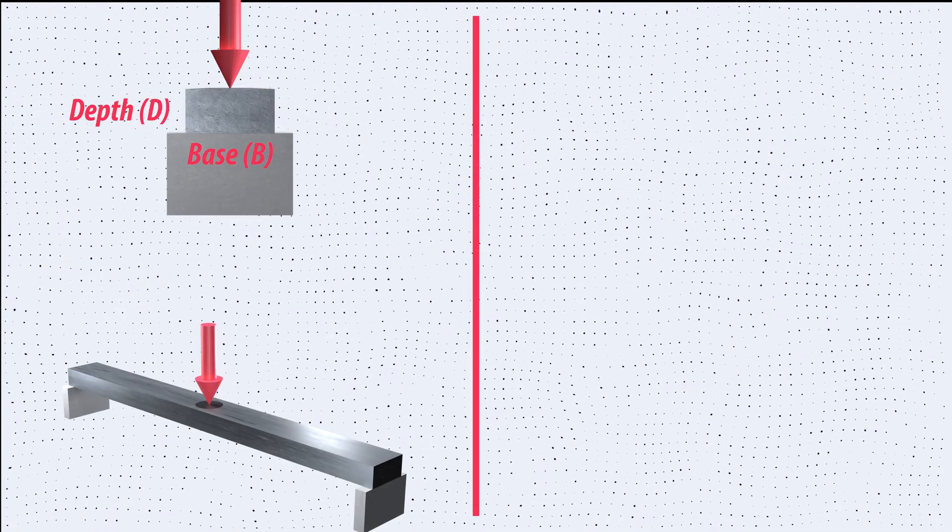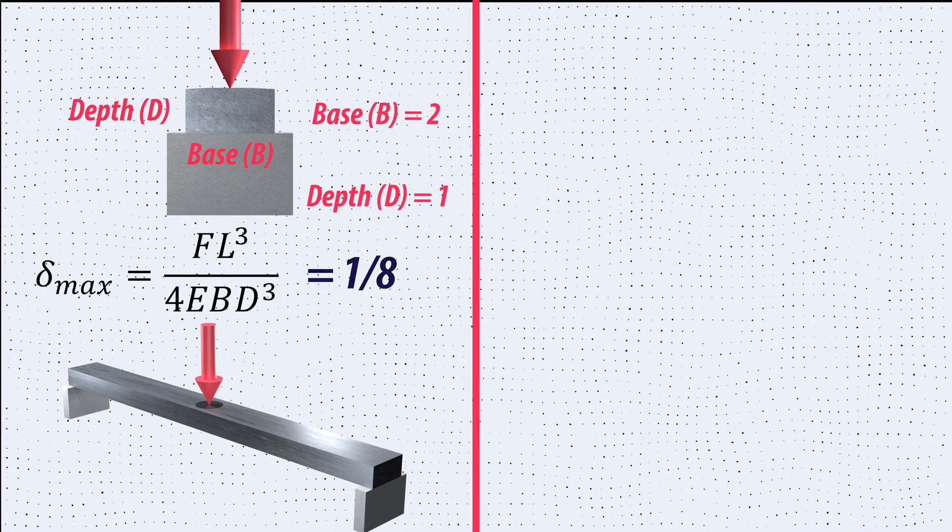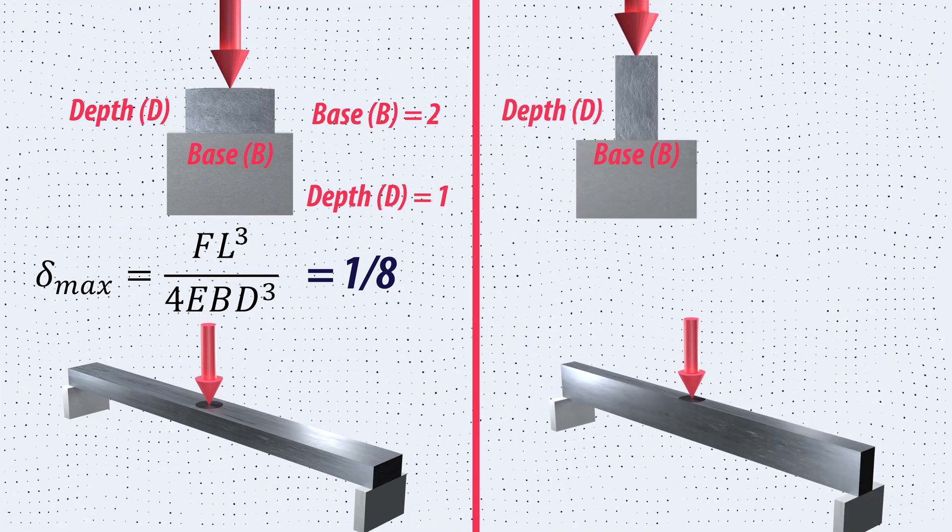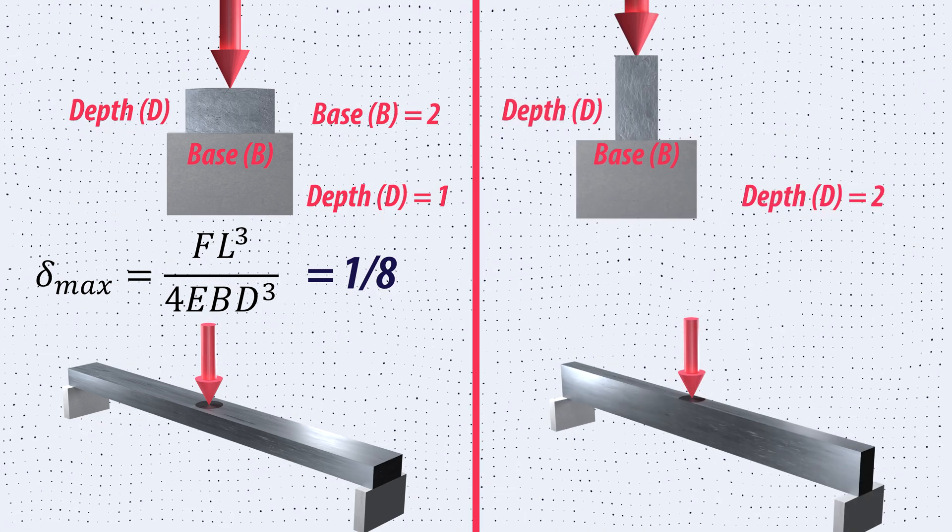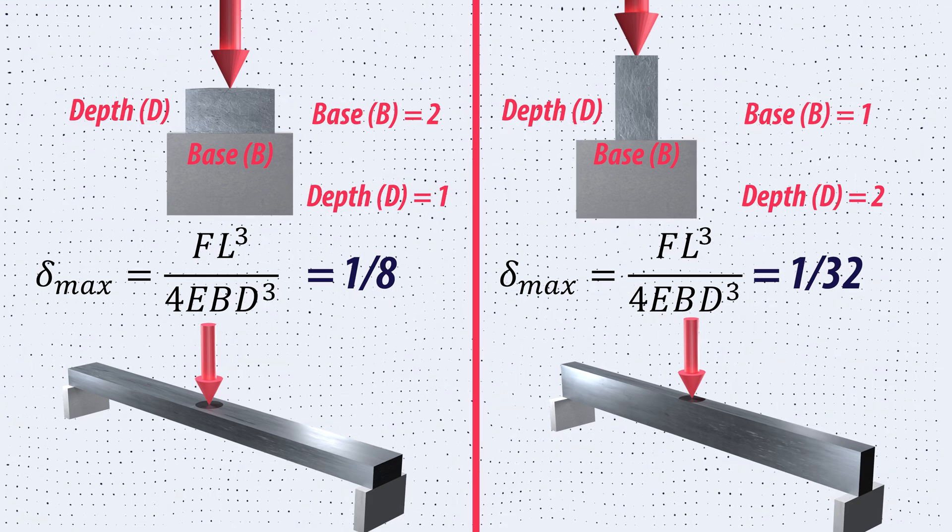When a force is subjected on the beam where the width is twice the depth, the beam deflects by one-eighth. However, if we change the orientation of the beam where the depth is twice the width, the deflection becomes four times less compared to the first situation.